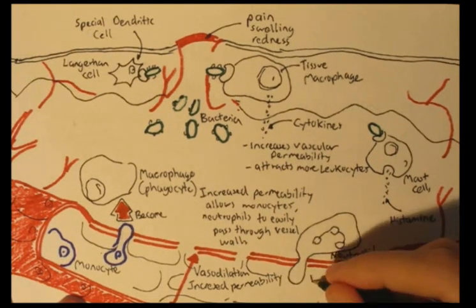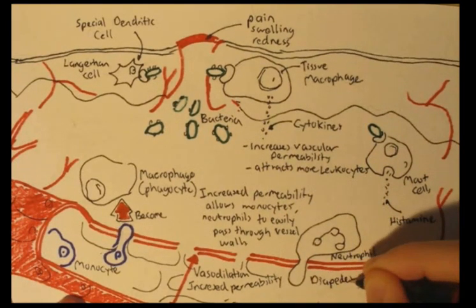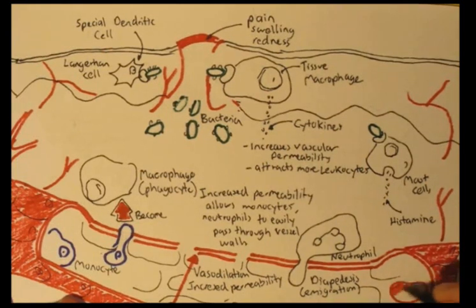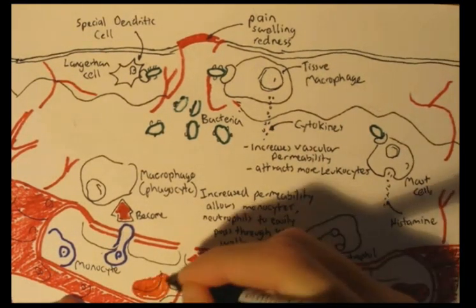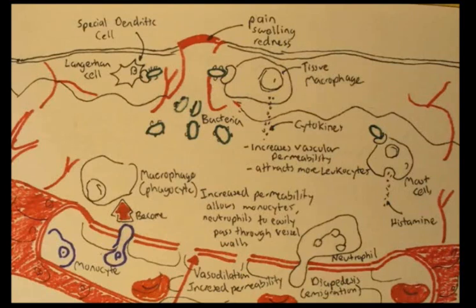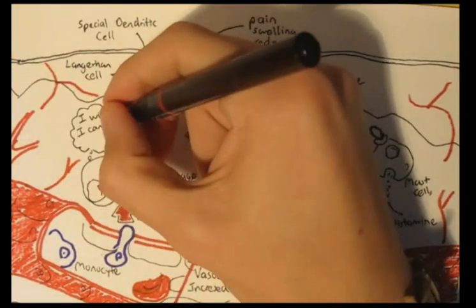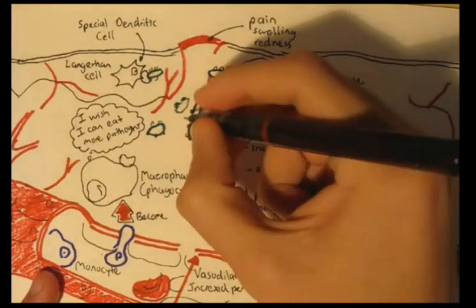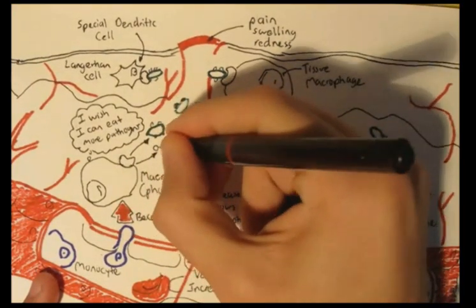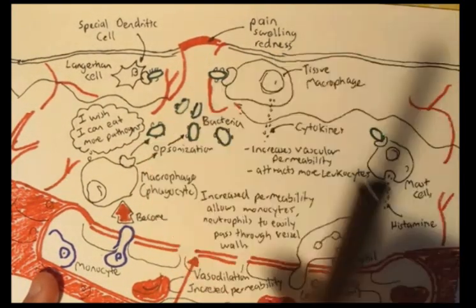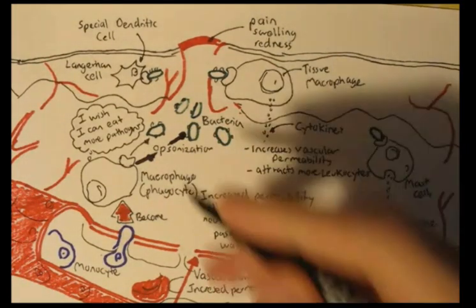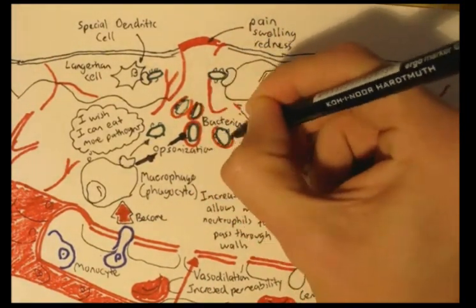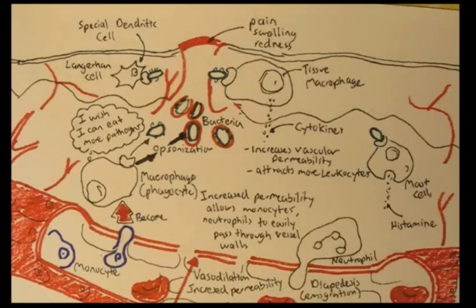Neutrophils are the most abundant leukocytes found in the body. They pass through vessel walls by a process called diapedesis, or emigration. Another important process called opsonization occurs on pathogens, which basically coats the pathogen so that phagocytes and other immune cells can more easily recognize and eliminate it.